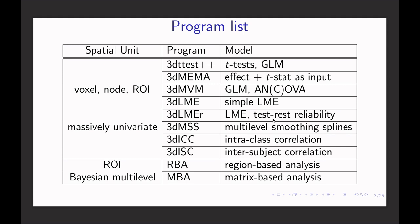The next category is ROI-based. From a modeling perspective, that's Bayesian multi-level modeling. Currently, there are two programs. First is RBA — Region-Based Bayesian Analysis. This program can be used to perform the typical group analysis when you have a list of regions of interest, for region-based analysis.